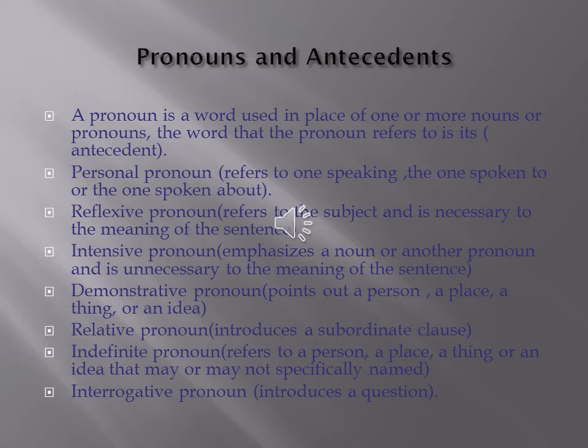Pronouns and antecedents. A pronoun is a word used in place of one or more nouns or pronouns. The word that the pronoun refers to is its antecedent. There are different types of pronouns. A personal pronoun refers to the one speaking, the one spoken to, and the one spoken about. A reflexive pronoun refers to the subject and is necessary to the meaning of the sentence. An intensive pronoun emphasizes a noun or another pronoun and is unnecessary to the meaning of the sentence.